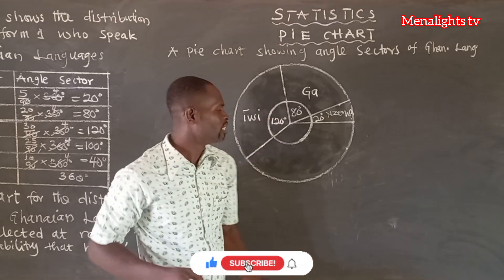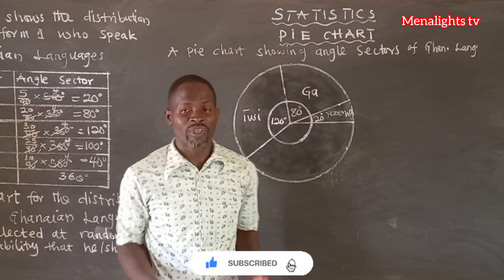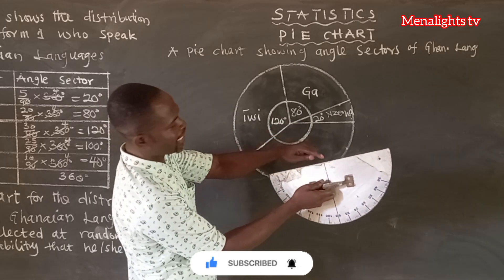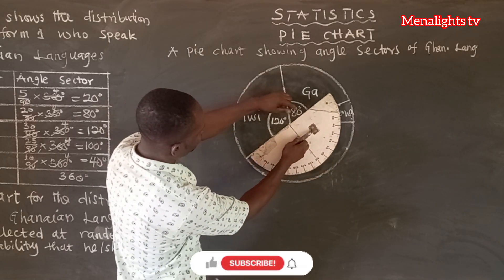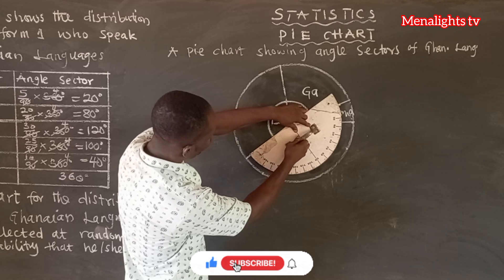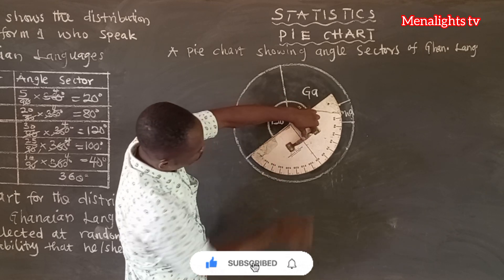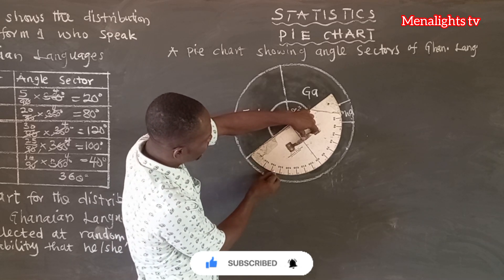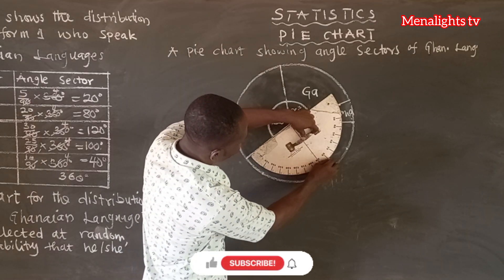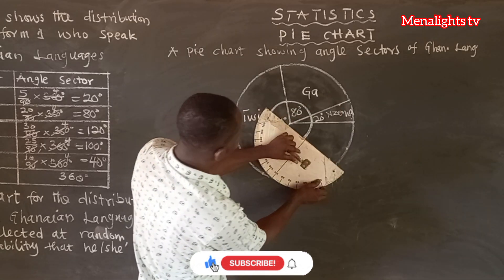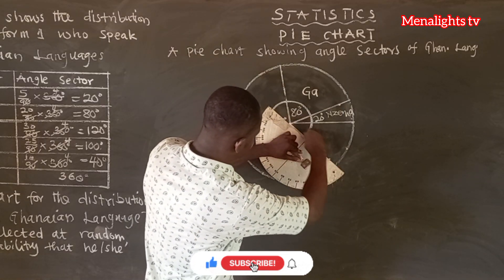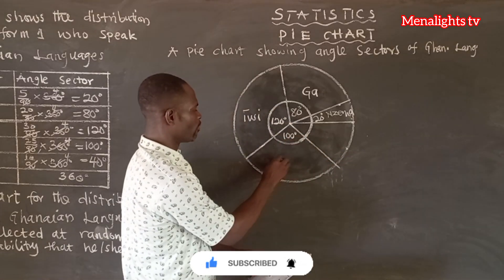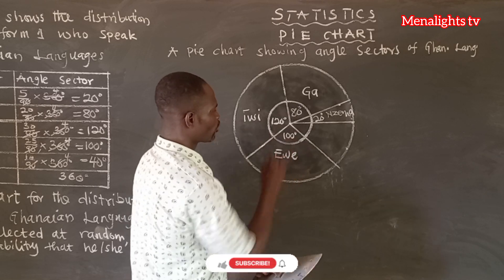Then after that we move to the next one, Ewe, which is 100 degrees. In the same way, the center line at the center and the baseline on the line. We count for 100: 0, 10, 20, 30, 90, 100. We draw through the 100-degree mark. This is 100 degrees and it's for Ewe.